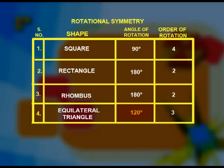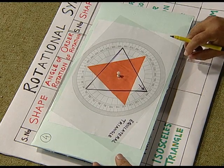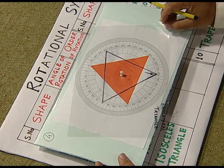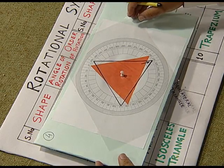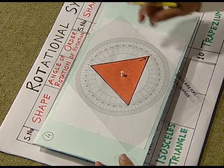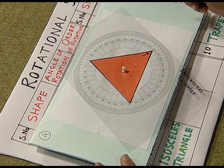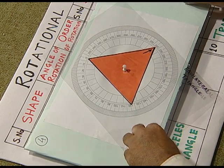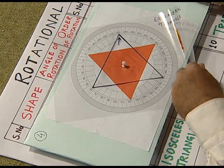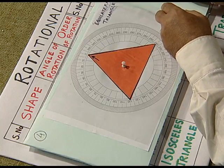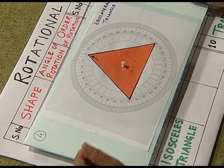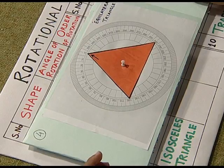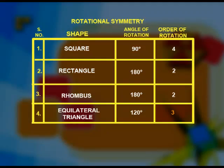On further rotation, the triangle coincides with itself for the second time after a total rotation of 240 degrees — a further 120 degrees. Finally, it comes back to its original position after 360 degrees. The total number of times the equilateral triangle coincides with its original position is 3. Therefore, the order of rotational symmetry of an equilateral triangle is 3.